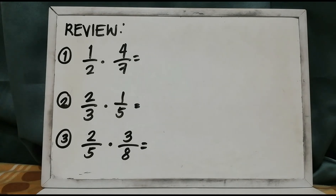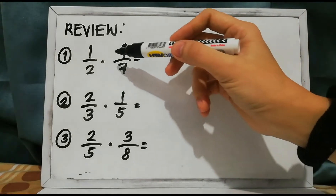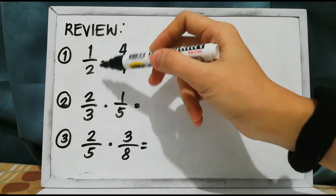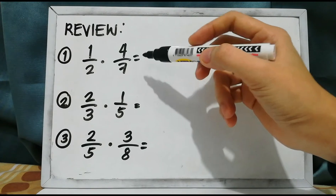Our topic for today is how to multiply rational algebraic expressions. But before that, let us have a review. We have example number 1: one half times four over seven.